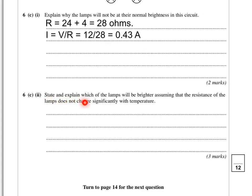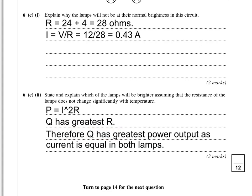The last part: state and explain which lamp will be brighter, assuming the resistance doesn't change significantly with temperature. We worked out their resistances earlier: lamp Q was 24 ohms, lamp P was 4 ohms. Because they're in series, they have exactly the same current passing through them. Power equals I squared R. So the brightness of the bulb, which is essentially the power output, depends on I and R. Since I is the same in series, it's the bulb with the greatest resistance that will be the brightest. Q has the greatest resistance, so Q has the greatest power output.